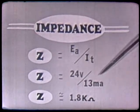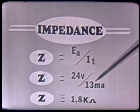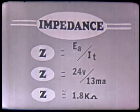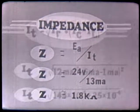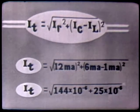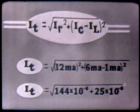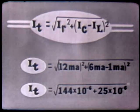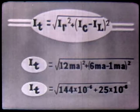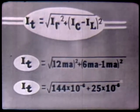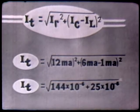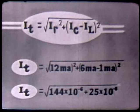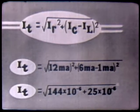Although I have used a graphic solution to find the total current of 13 milliamps, we can also use a more accurate method: the Pythagorean theorem. IT equals the square root of IR squared plus the quantity of IC minus IL, all squared. Substituting: 12 milliamps for IR, 6 milliamps for IC, and 1 milliamp for IL. Performing the calculation: 12 milliamps squared is 144 times 10 to the negative 6. 6 minus 1 is 5; 5 squared is 25 times 10 to the minus 6.